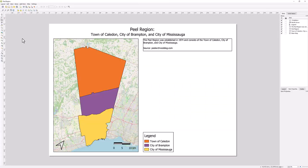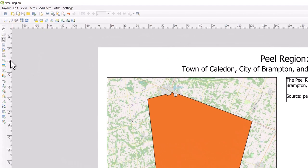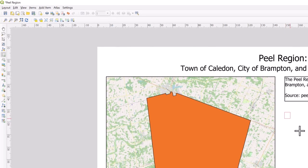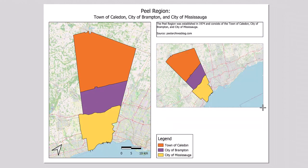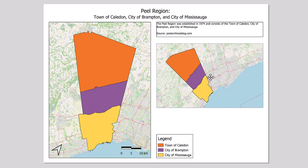Once you have your map layout open, click on the Add Map icon in the side menu bar. Hovering over your map, you will see crosshairs appear. Click and drag to create the desired shape and size of your inset map. If you need to edit the shape and size, click and drag the white boxes to enlarge or shrink your map. If you need to change the placement of your inset map, click and drag the map to your desired area.